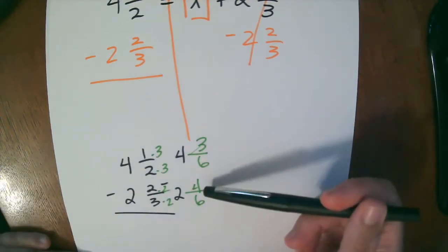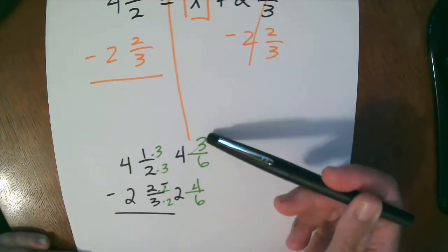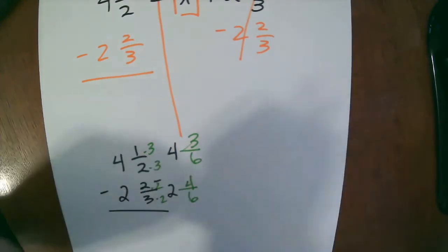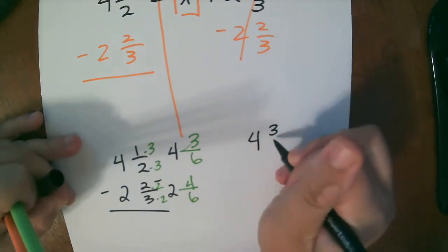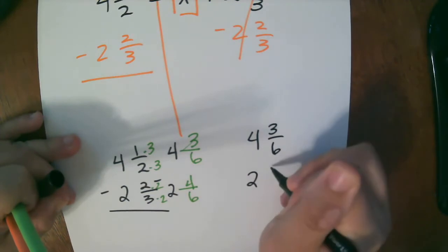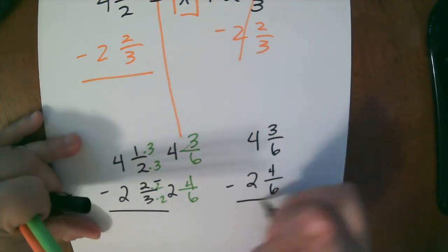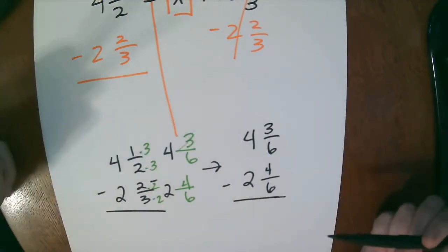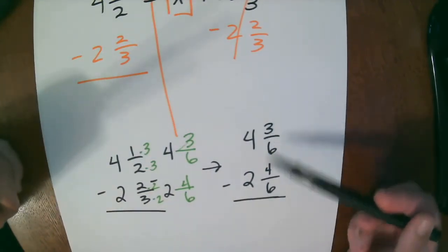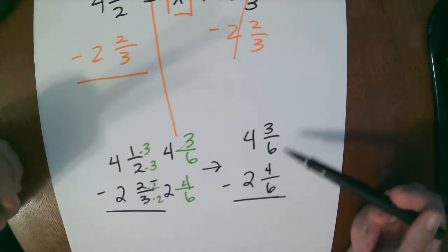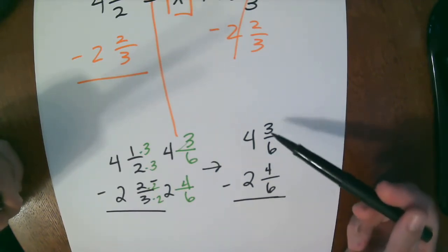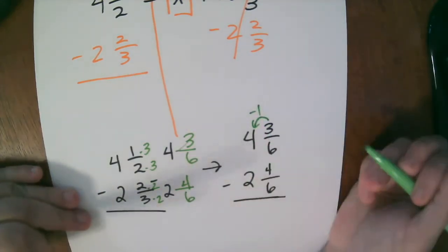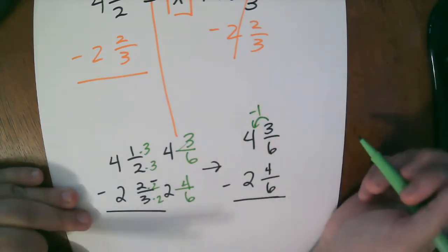So we have 4 and 3 sixths minus 2 and 4 sixths. What do you notice? Can I take 4 from 3? I can't. So we're going to have to borrow. And let me just rewrite it again because you know I'm a stickler for keeping things nice and neat. Not making mistakes. I'm just rewriting it. That's all I did. So I'm going to have to borrow. Here's a 4. This is a 3. I can't take 4 from you when you only have a 3. So I'm going to have to borrow from this one. So I'm going to take 1 from my whole number. I'm going to take a dollar. I'm going to go get a dollar. And I'm going to go make change.